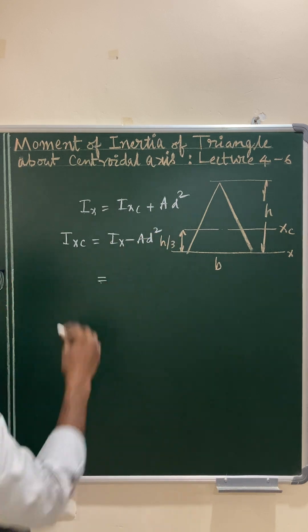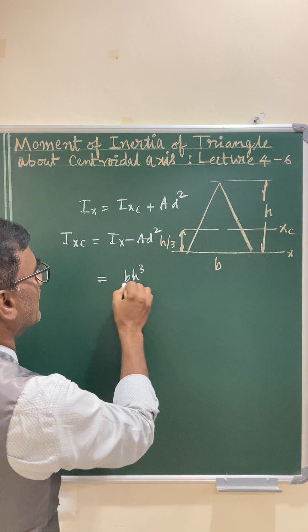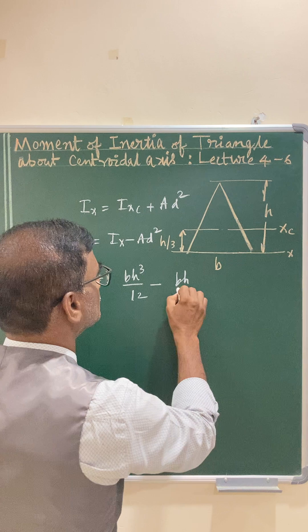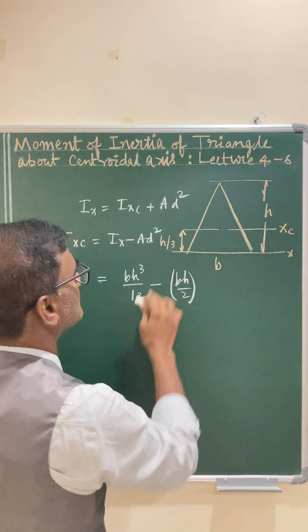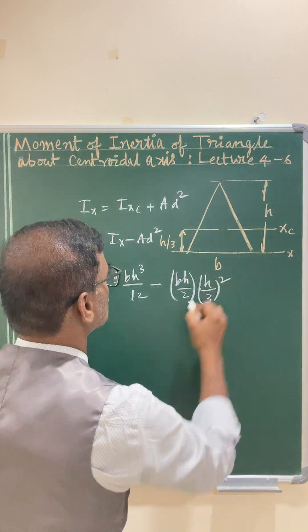As you know, the Ix value is bh³/12 minus area, that is bh/2, and d is h/3, so (h/3)² whole squared.